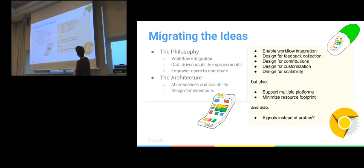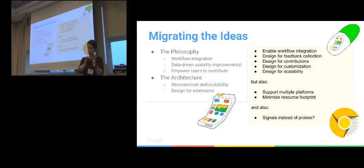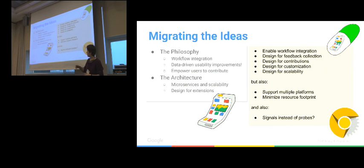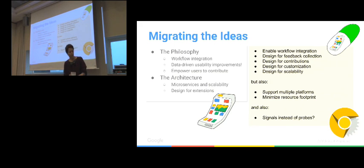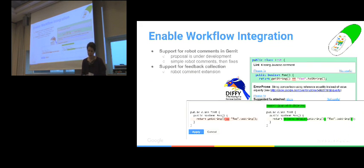The goal is to migrate the Tricoder idea to Chromium. Key considerations: feedback is important, and code review is a good place for it. We need to enable robot comments in code review. We also need to think about contributions, customization, scale, and resource constraints. At peak hours, despite all the data centers, we're at peak capacity — we can't just add analysis to everything. We need to minimize the resource footprint. Could we go to more signals rather than probes, thinking about usability?